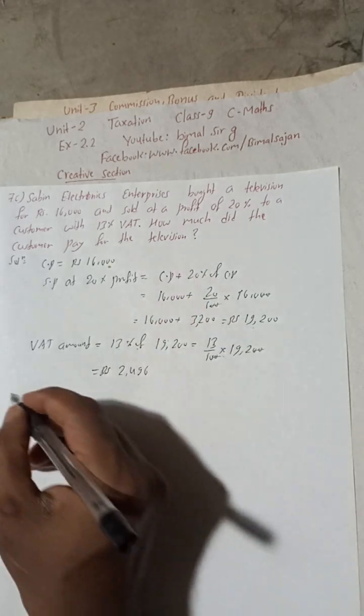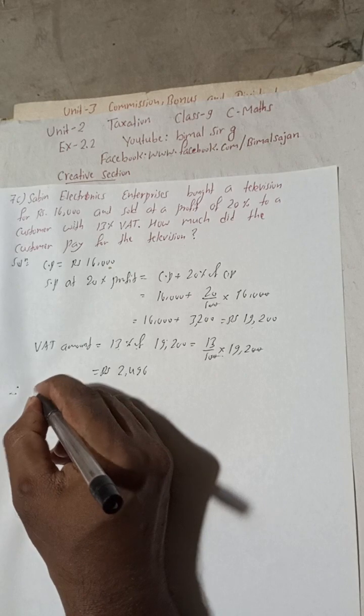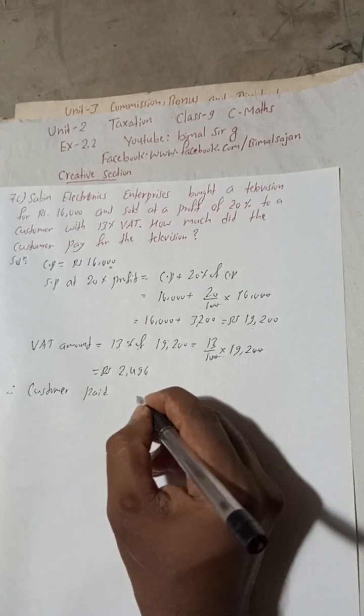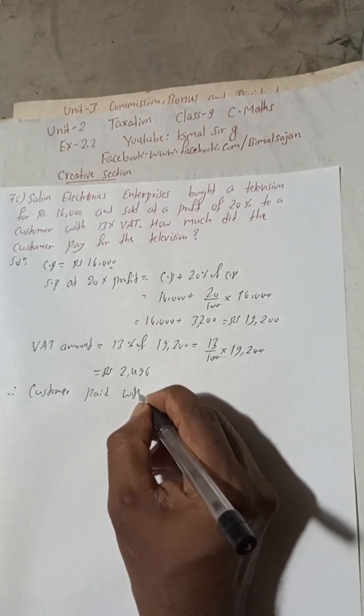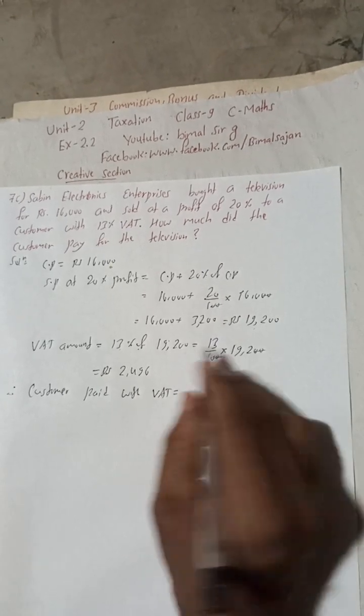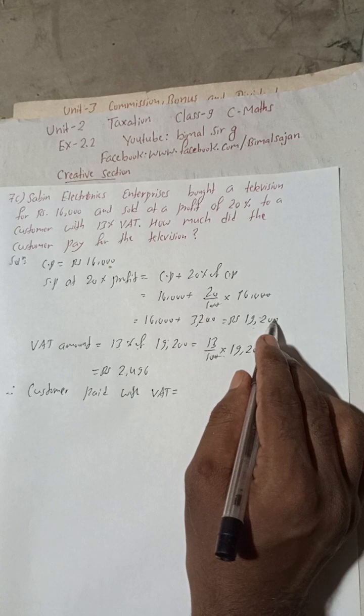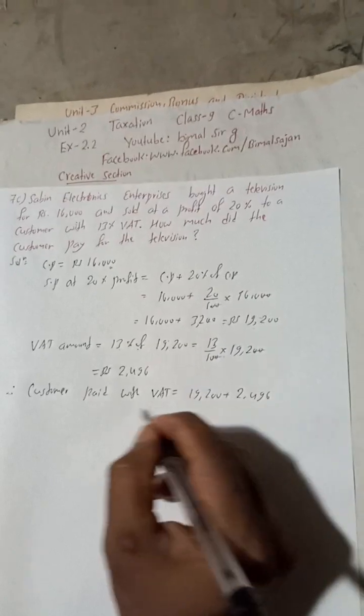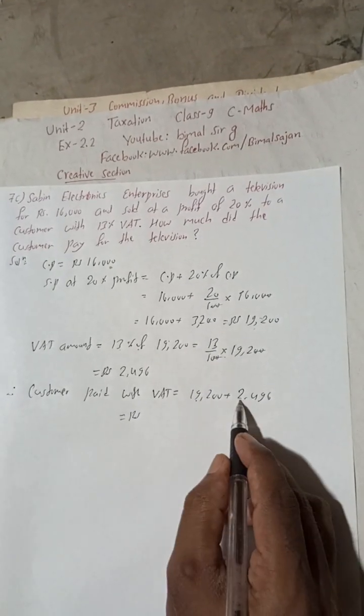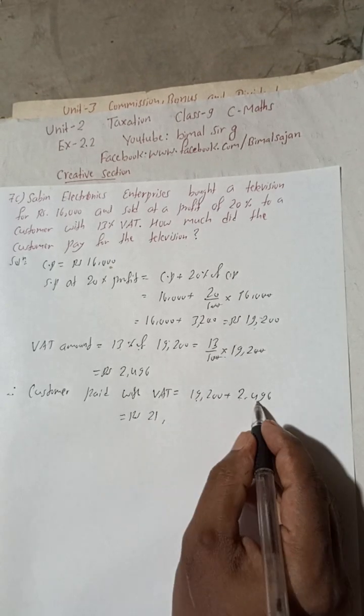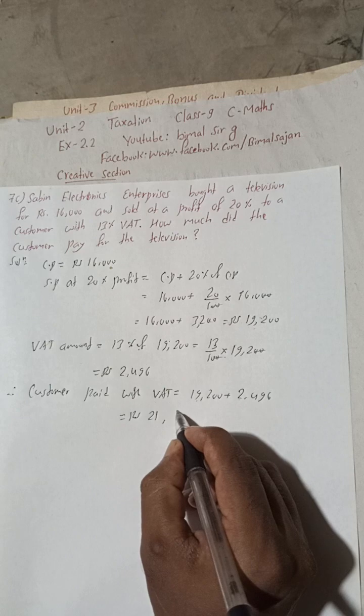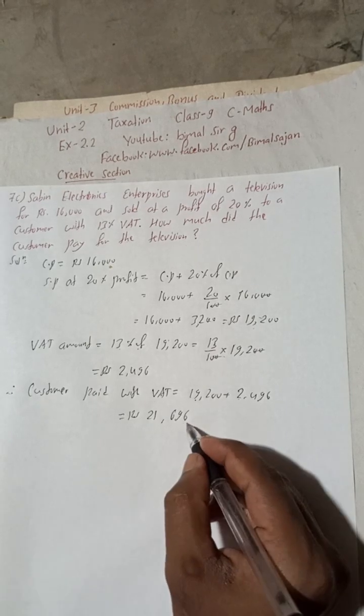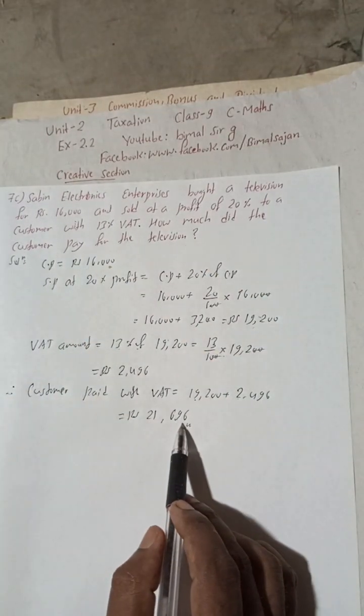Now how much did the customer pay for the television? So the customer has to pay this VAT amount also. Therefore, the customer paid with VAT is equal to this SP, that means 19,200 plus this 2,496. When we add this, so 21,696. Rs 21,696 is the amount that the customer has to pay for the television. This is the solution.